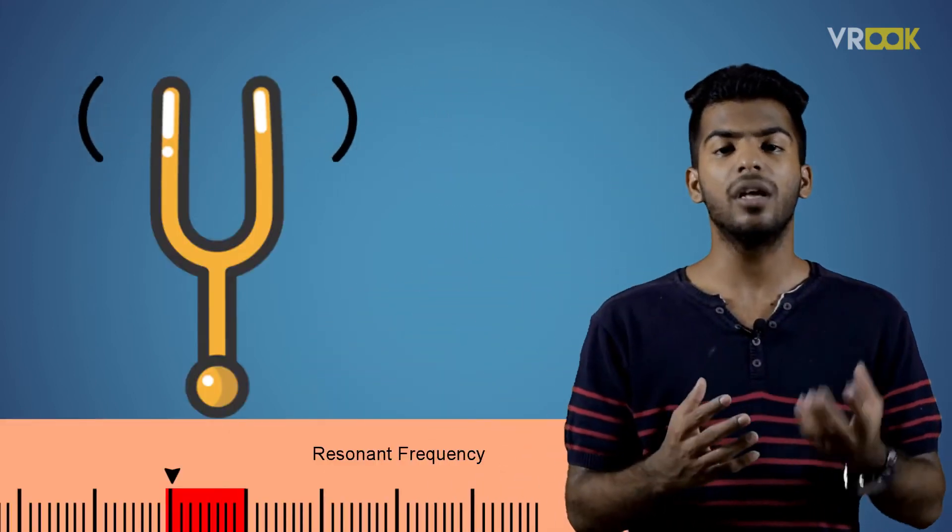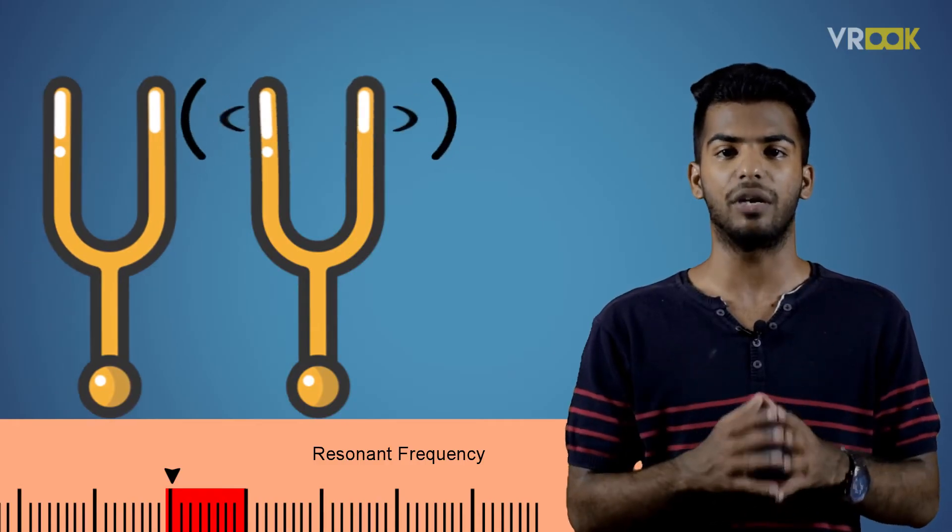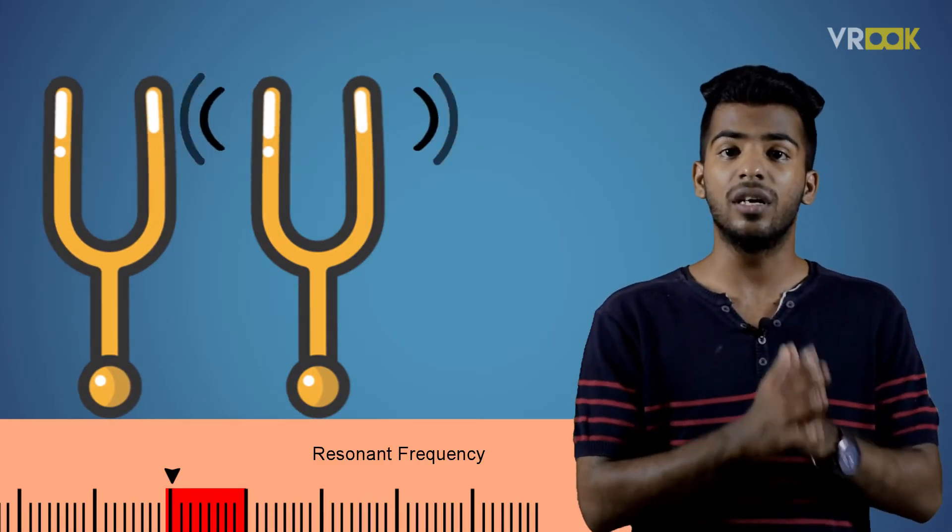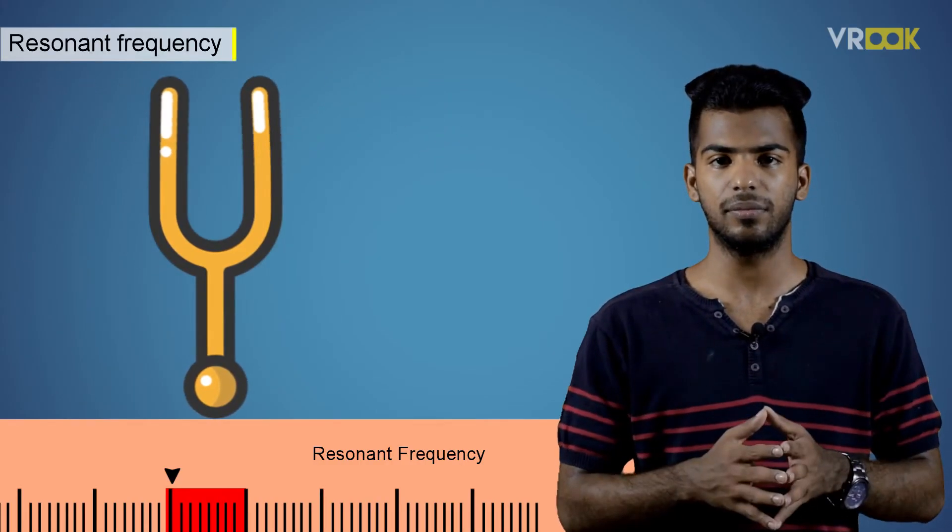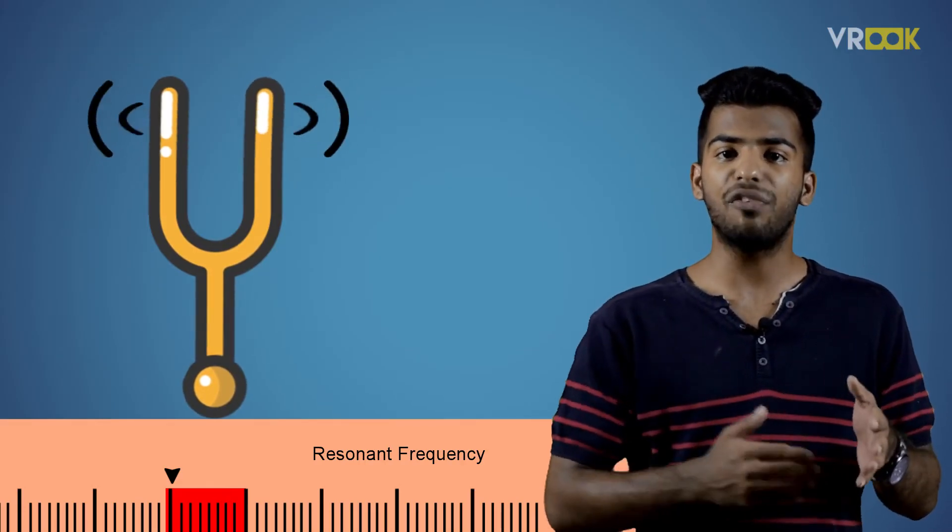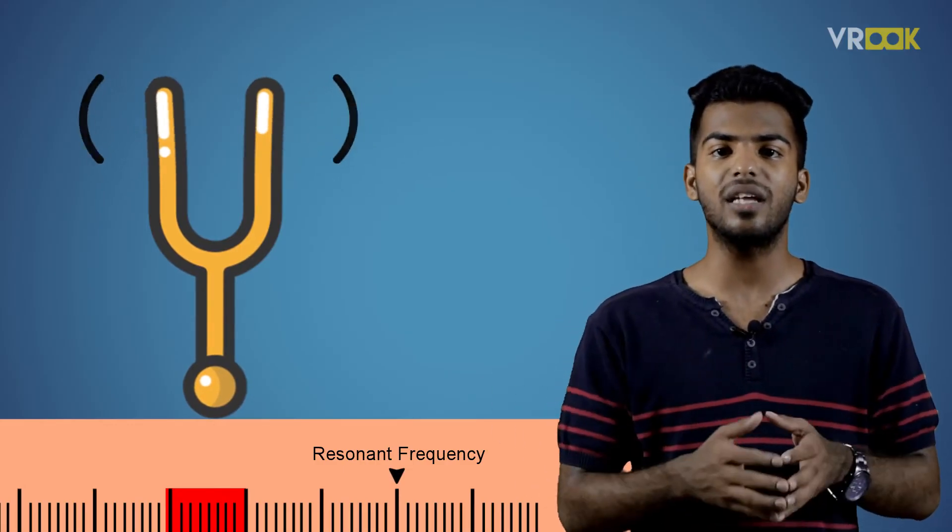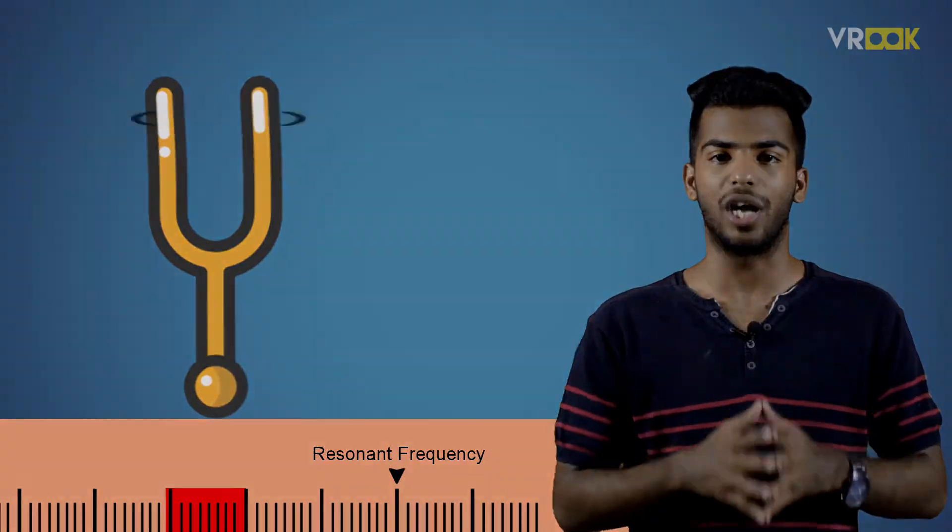Every object resonates at maximum amplitude at some particular frequency. We call this the resonant frequency. If the frequency changes slightly from this value and if we observe the amplitude of oscillations decreasing drastically, then we can say resonance is sharp.